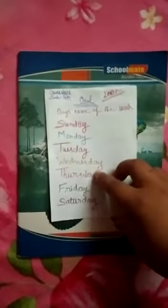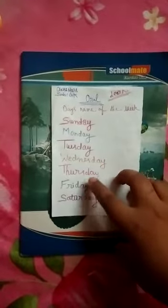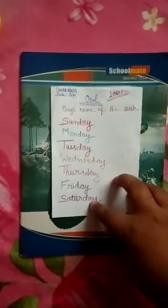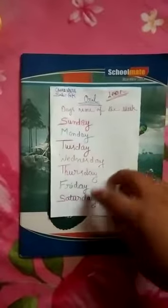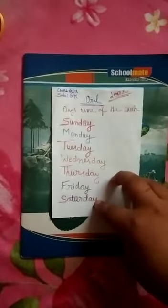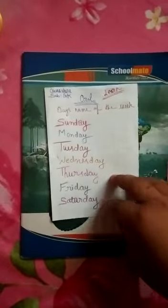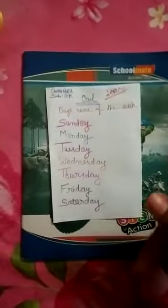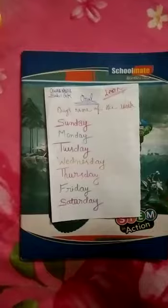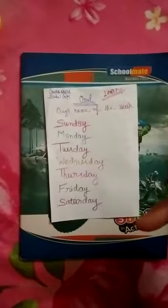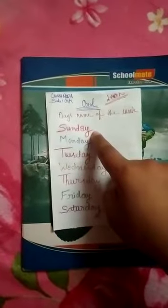next day Thursday, Thursday ke next day Friday, Friday ke next day Saturday. So six days hum log school jaate hain, phir 7th day aata hai woh Sunday, chutti ho jaata hai us din. Fir yeh days repeat hotay hain: Monday, Tuesday, Wednesday, Thursday, Friday, Saturday. Okay, is tarah se total 7 days hotay hain.